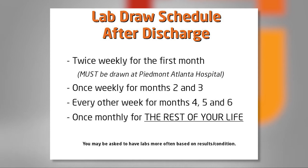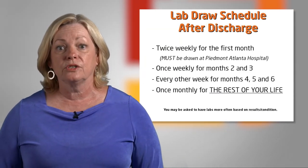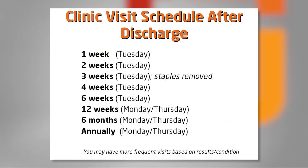The lab draw schedule after discharge is: twice a week for the first month, once a week for months two and three, every other week for months four, five, and six, then once a month for the rest of your life. You may be asked to have labs more often based on your condition. Your clinic visit schedule is: first week on Tuesday, second week on Tuesday, third week just to have staples removed, then at four weeks and six weeks — both on Tuesdays. At 12 weeks your schedule changes to Monday or Thursday, then six months, and then annually.